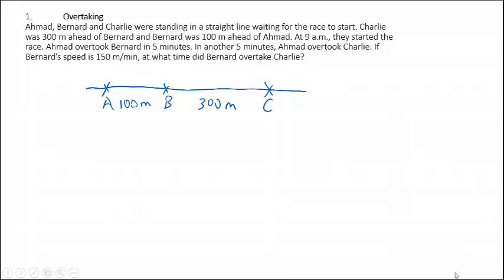Hi everyone. Let us go through the solutions for this top 5 common questions for speed. The first question is about overtaking. We have Ahmad, Bernard and Charlie standing in a straight line waiting for the race to start. Charlie was 300m ahead of Bernard, and Bernard was 100m ahead of Ahmad. We draw a line to represent their positions — Charlie is in front of Bernard by 300m, and Bernard is in front of Ahmad by 100m.